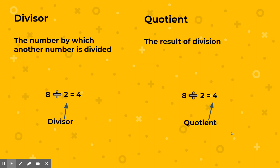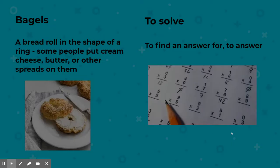Quotient is the result of division — it's a fancy word for answer. So in 8 divided by 2, I want to make two equal groups out of 8 and I'm going to have 4 items in each group. 4 is the quotient.